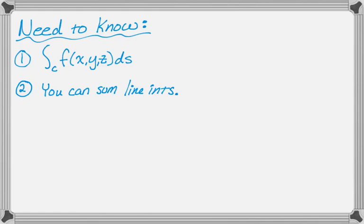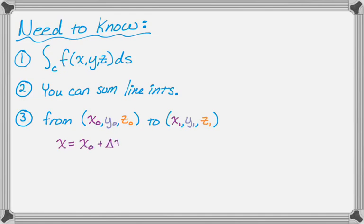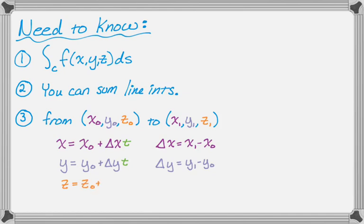And the third thing you need to know in this case is how to parameterize a linear path. So let's say from (x₀,y₀,z₀) to (x₁,y₁,z₁). So to do that, the way that I always do it, is I'll say x is x₀, so that's like your starting point, plus a Δx times t. And then Δx is just like when you're calculating slope in algebra 1, it's going to be x₁ minus x₀. And then I do the same thing for y. So y is going to be y₀, your starting point, plus Δy times t. And then Δy is y₁ minus y₀. And z is the same thing. So where you start plus the change times t.